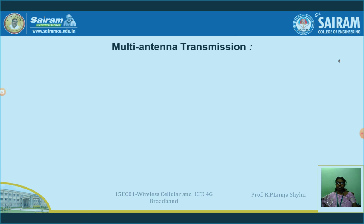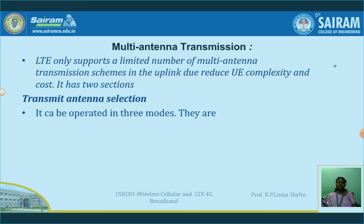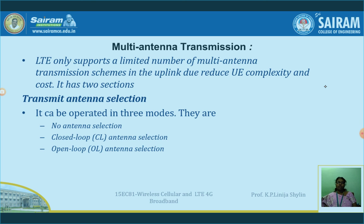Next, multi-antenna transmission. We are aware about multi-antenna transmission schemes and are planning to use them to reduce cost. This also has two sections: the transmit antenna section. The transmit antenna section can be operated in three modes: no antenna selection, closed loop antenna selection, and open loop antenna selection. By this, I will conclude this topic here, and the modes of antenna selection can be discussed in the next session. I hope that with the suitable illustration, everyone is able to understand and distinguish the types of frequency hopping. Thank you.